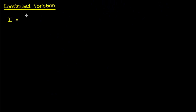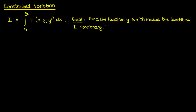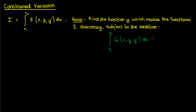Let's move on to the second topic: constrained variation. Suppose I had a functional given by the integral from x1 to x2 of F(x, y, y') dx — back to a single dependent variable. My objective is to find the function y which makes this functional stationary. But what if there's an additional condition: that the integral from x1 to x2 of G(x, y, y') must equal some known constant? So we have to solve the Euler-Lagrange equation subject to the constraint that the functional J — the integral of capital G — is held at a fixed constant.